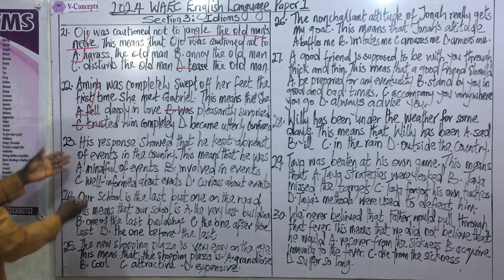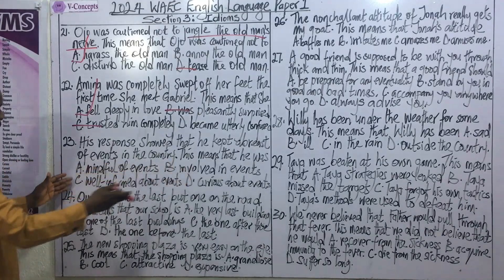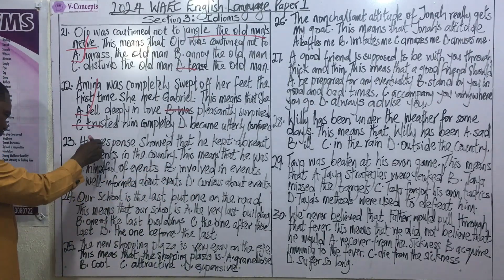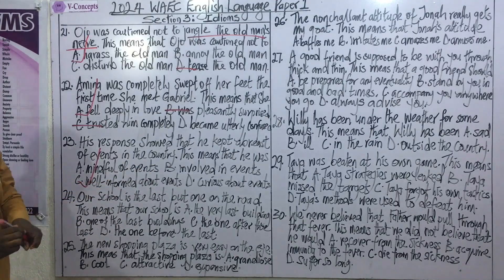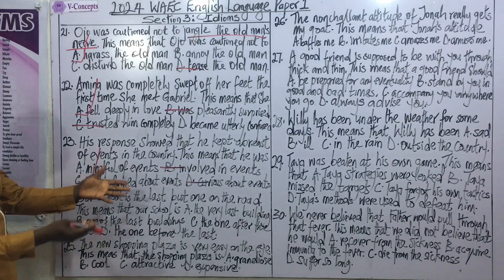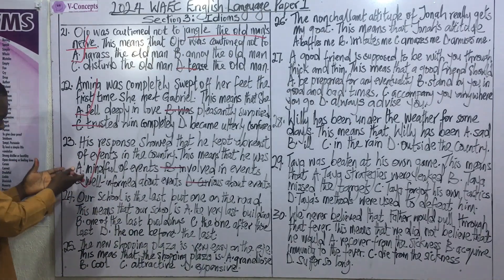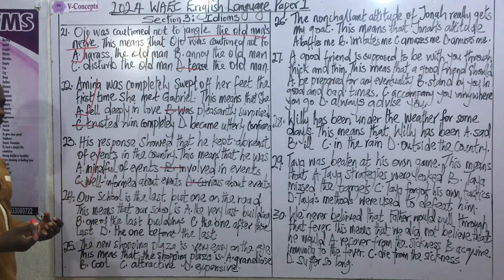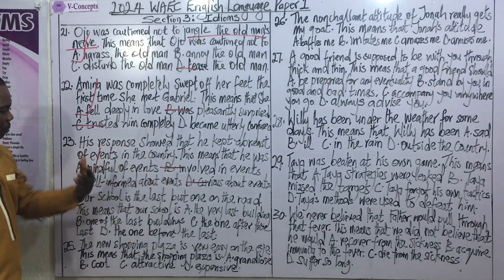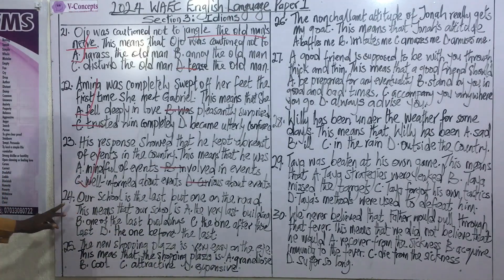Question 23: His response shows that he kept abreast of events in the country. This means that he was: A) mindful of events, B) involved in events, C) well informed about events, D) curious about events. The correct answer is C — well informed about events. Options B and D are casual interpretations. To keep abreast of something means to keep close track of ideas or thoughts — essentially to be well informed.